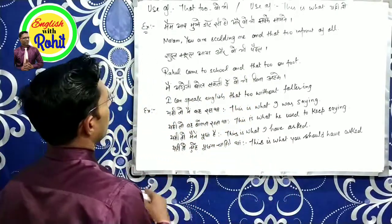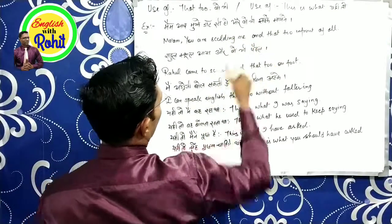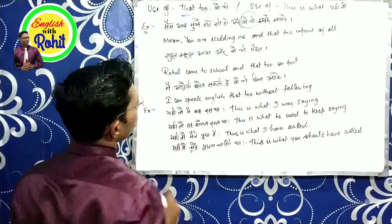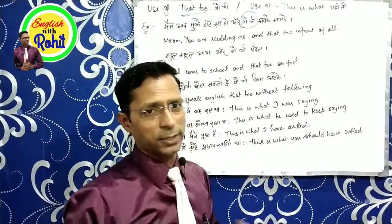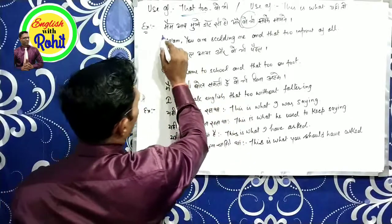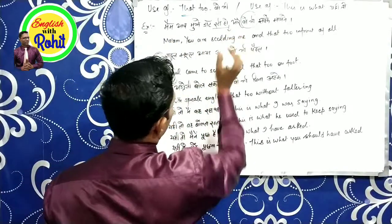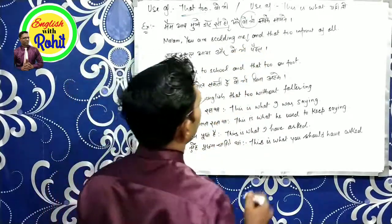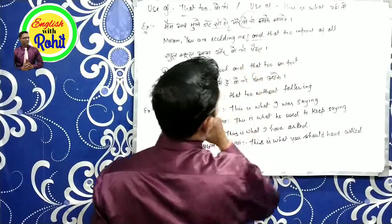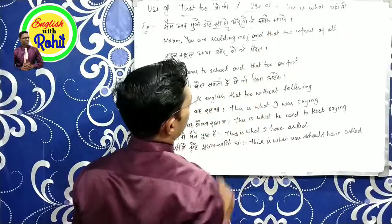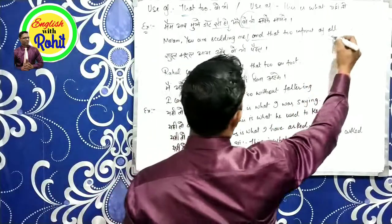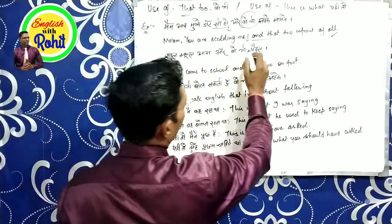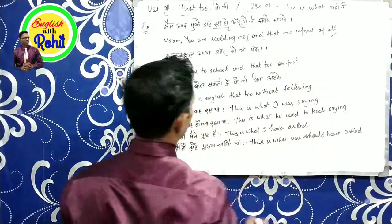First sentence. Ma'am, you are scolding me — and that too in front of all. So 'that too' is used to emphasize an additional condition or circumstance, as in: you are scolding me and that too in front of everyone.